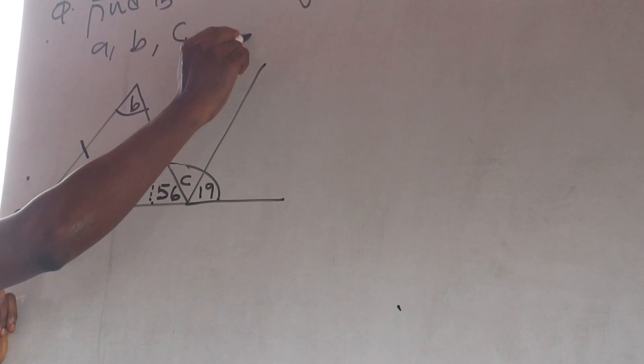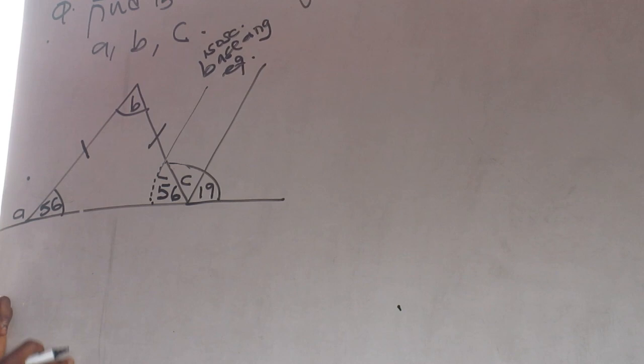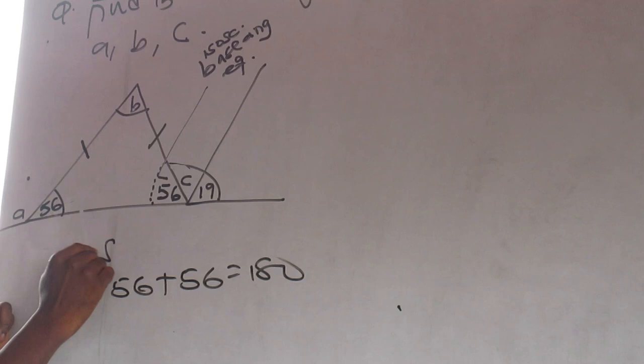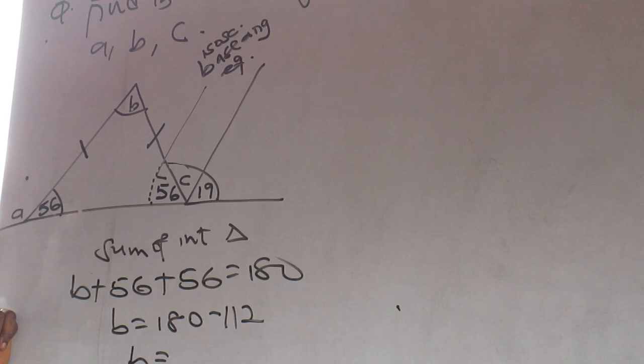So it's isosceles. So there is a reason behind it. Base angles equal and the reason is what? Isosceles. Base angles are equal. The reason is isosceles. So I can just get my sum of interior for B. B plus 56 plus 56 equals 180. B equals 180 minus 112. What is B? 68.